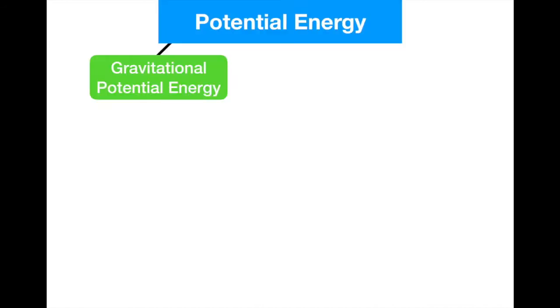There are two forms of potential energy: gravitational potential energy, and then there's one we're going to discuss later. Before we get to that, in our next section, we're going to talk about how you can actually calculate gravitational potential energy.